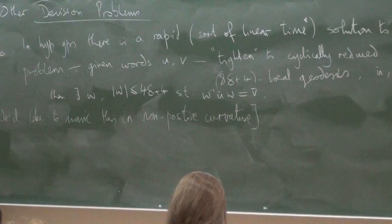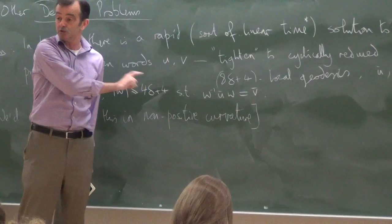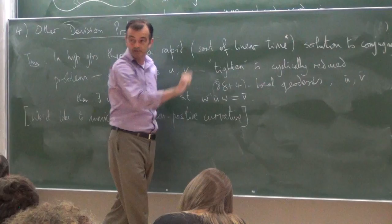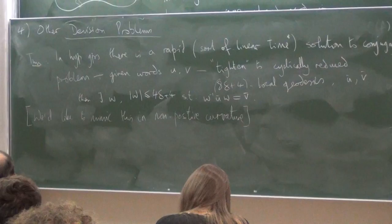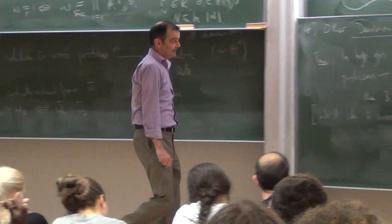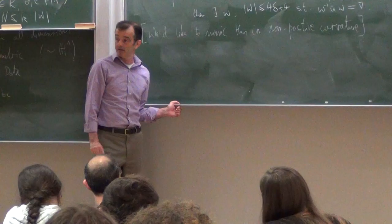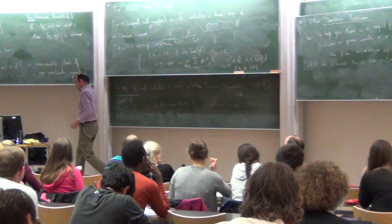Then there exists some W of uniformly bounded size, I think it's 8 delta plus 4, so that W conjugates one to the other. It's extremely rapid. You just make them local geodesics, that's the tightening process, and then it's not quite like the free group where they'll really be equal, but they're almost equal. The length of the conjugating element is really short.